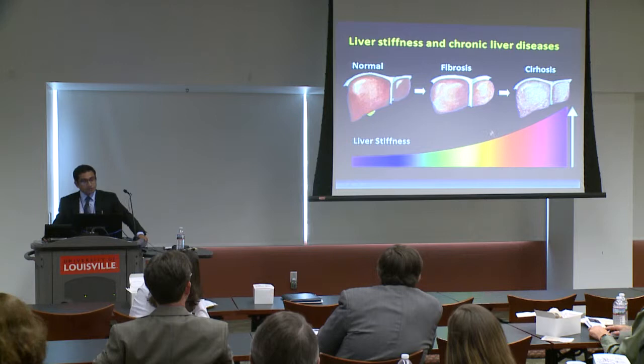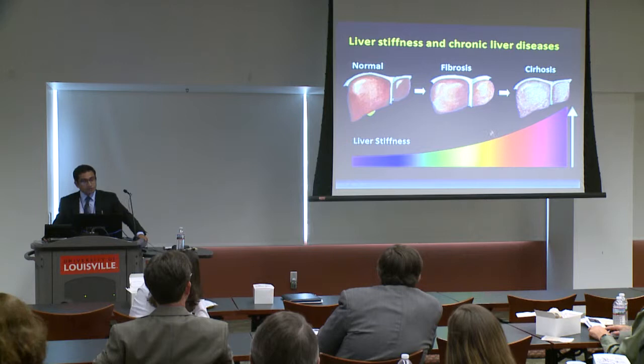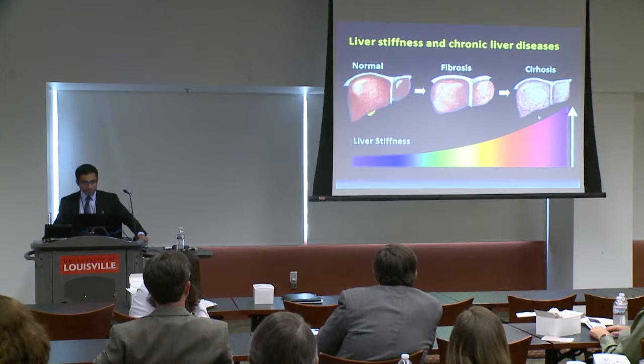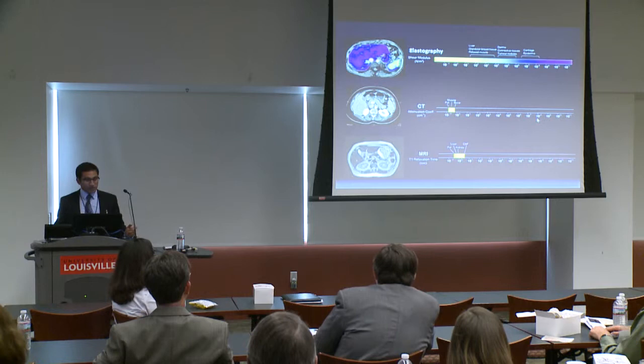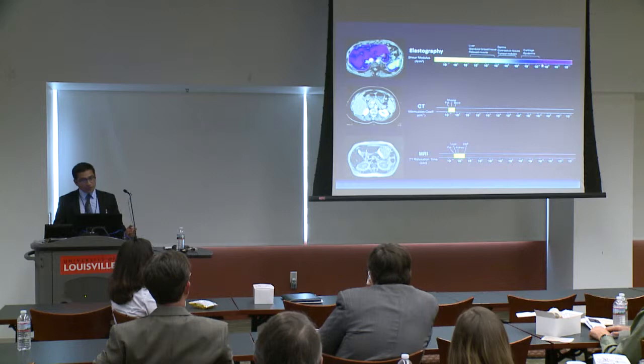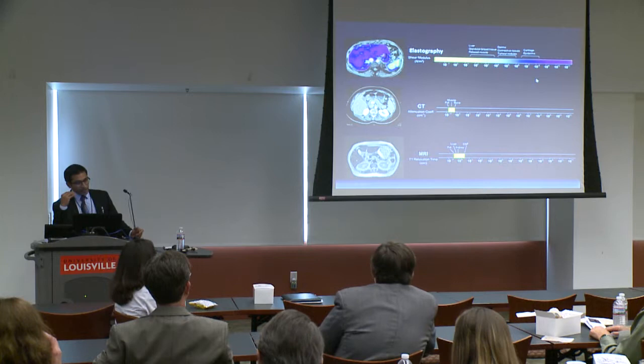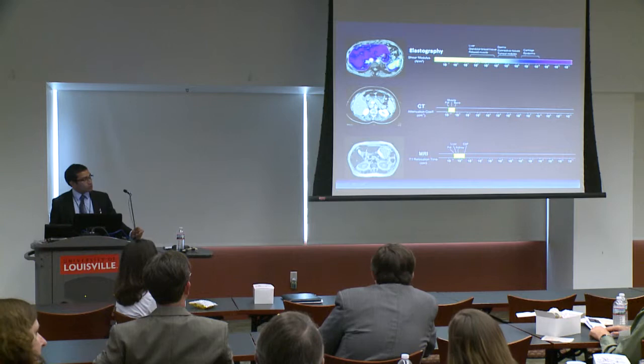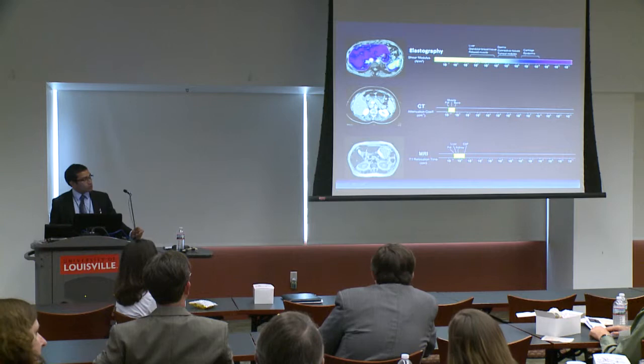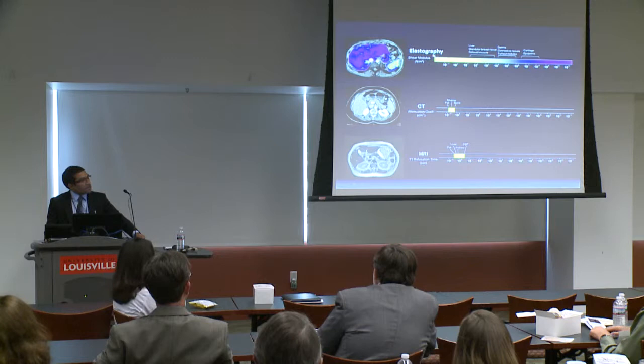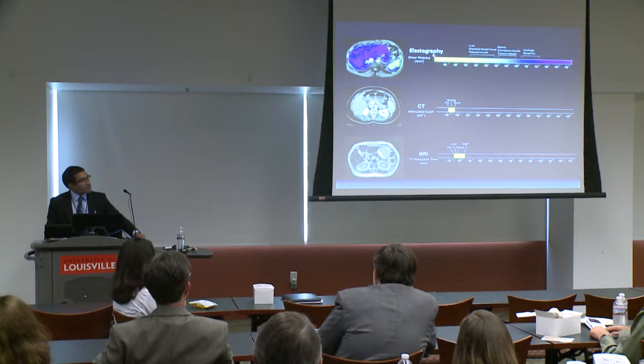Normal liver is usually soft, whereas as fibrosis progresses and cirrhosis develops, the liver becomes hard. So it makes sense to quantify tissue stiffness to differentiate normal versus fibrotic or cirrhotic liver. The spectrum of stiffness of tissues is very wide — liver is around ten to the power of one, whereas cartilage and epidermis are about ten to the power of eight. So stiffness differences across tissues are enormous, and stiffness-based elastography techniques are more promising to differentiate between different organs and tissues than conventional CT or MRI quantitative parameters.